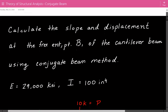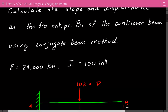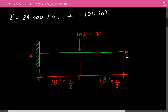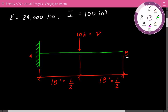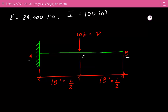Young's modulus E is equal to 29,000 ksi, and the moment of inertia is equal to 100 inches to the fourth power. Here's our cantilever beam — the fixed end is A and the free end is B. We have a concentrated load P acting at the midpoint C equal to 10 kips. The total length is 18 feet plus 18 feet, so that's 36 feet.